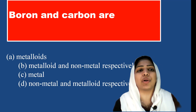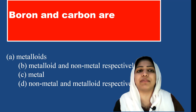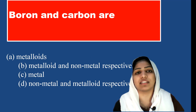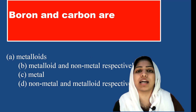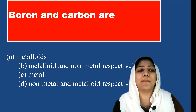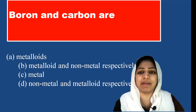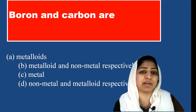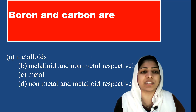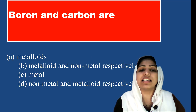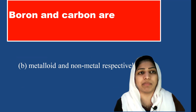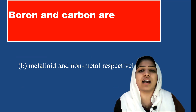Next question: boron and carbon are what? When we study elements, we study classifications — metals and non-metals. Elements with a mixture of properties are metalloids. Boron is an example of a metalloid, not a metal or non-metal. Carbon is a non-metal. The answer is option B: metalloid and non-metal respectively.